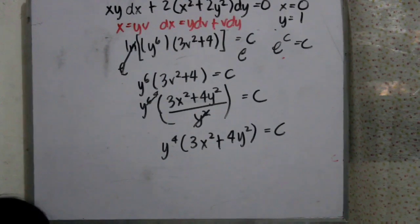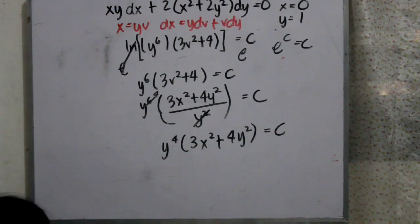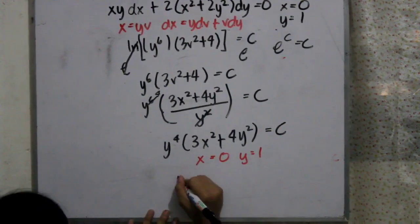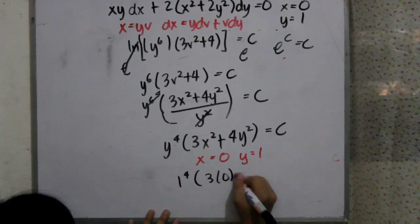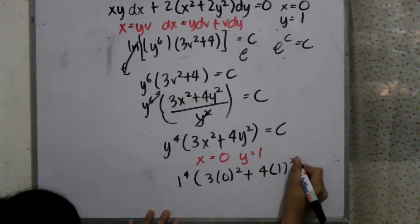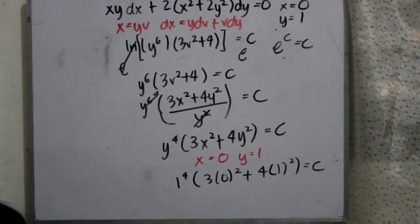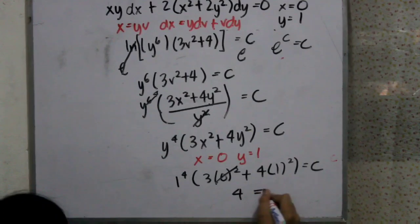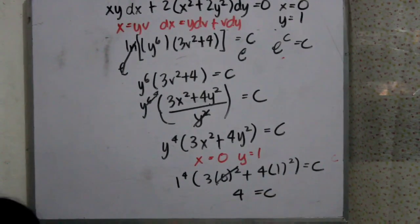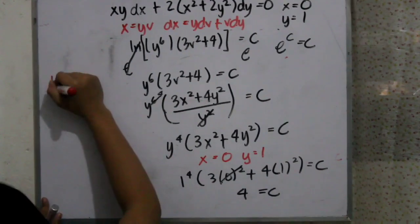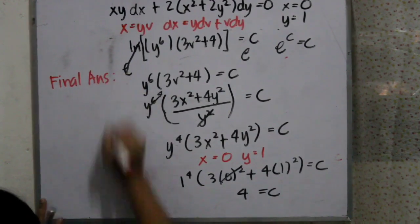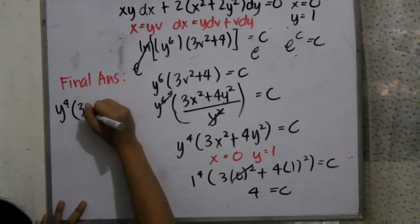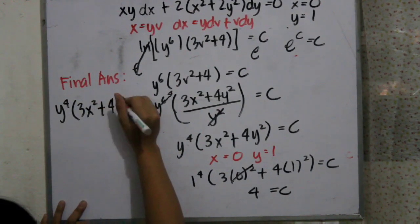Now we have to substitute our initial values: x equals 0 and y equals 1. We get 1⁴·(3·(0²) + 4·(1²)) equals c. Since 3 times 0 is 0, we obtain the value c equals 4.